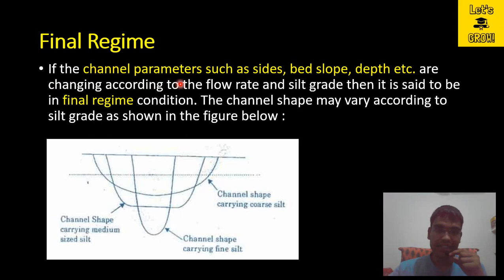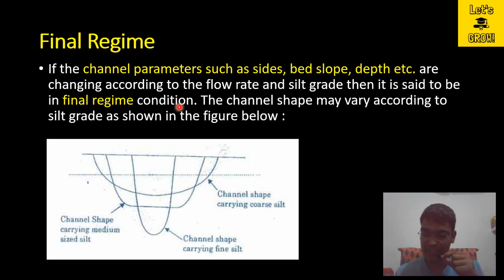Now we will discuss final regime. If the channel parameters such as sides, bed slope, depth, etc. are changing according to the flow rate and silt grade, then it is said to be in final regime condition. If the sides, slope, and depth of the channel are changing as per the discharge passing through the channel and the silt grade variation, and due to these the physical parameters of the channel are changing, then we can say it is the condition of final regime.